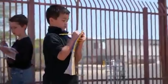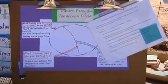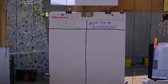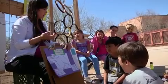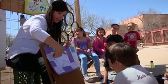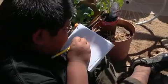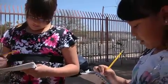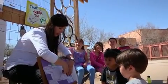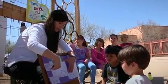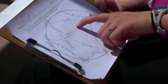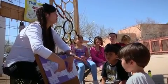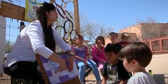And the last group makes a garden connection circle. So what you'll do is, using this chart or things in your journal that you haven't included, you're going to write down seven living and non-living components. You'll write the components on each of the lines, then draw how the things are connected, and label the relationship.